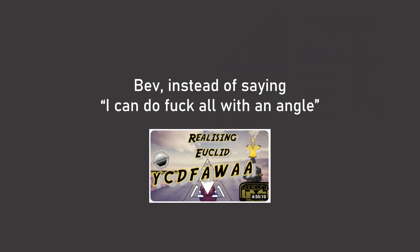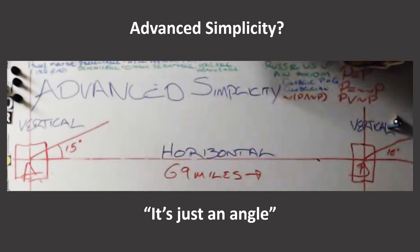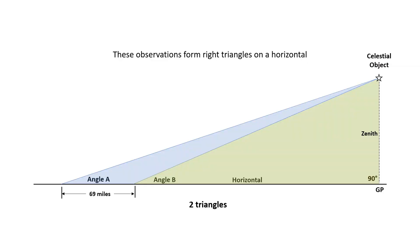And this is the problem. So Bev, instead of saying "I can do fuck all with an angle," you should be asking "What the fuck can I do with an angle?" I mean, I thought your channel was all about realizing Euclid and learning about geometry. Saying "it's just an angle" is ridiculous. First of all, you should have understood that since you're basing this on a horizontal, that means these angles form right triangles with the zenith line to the celestial object. And you also should have known that you could use trigonometry to model this on your horizontal.